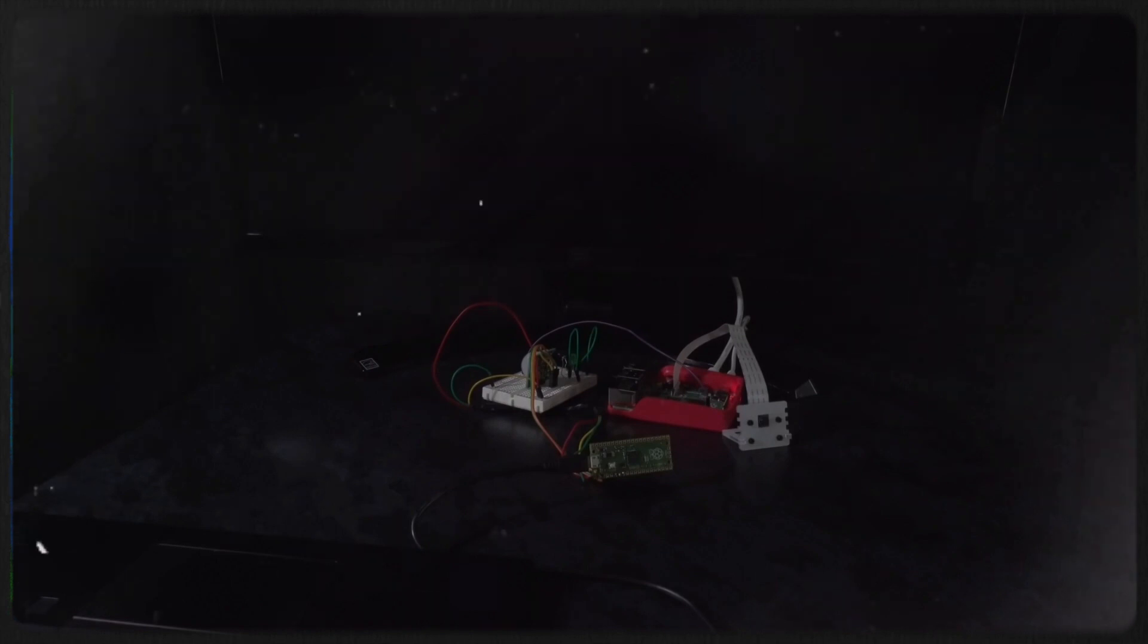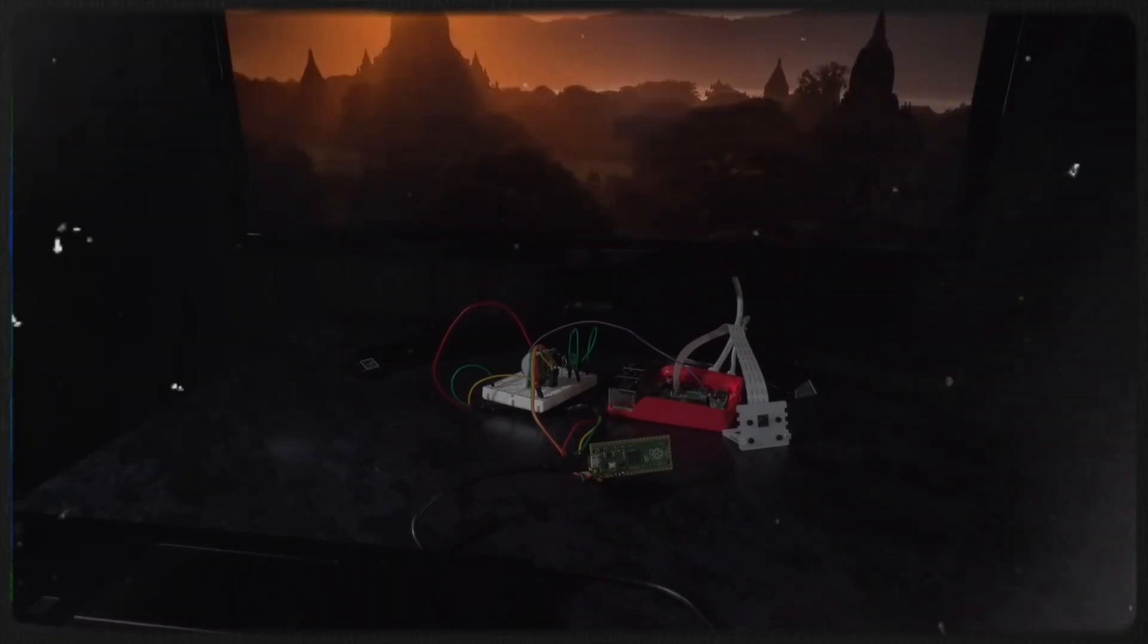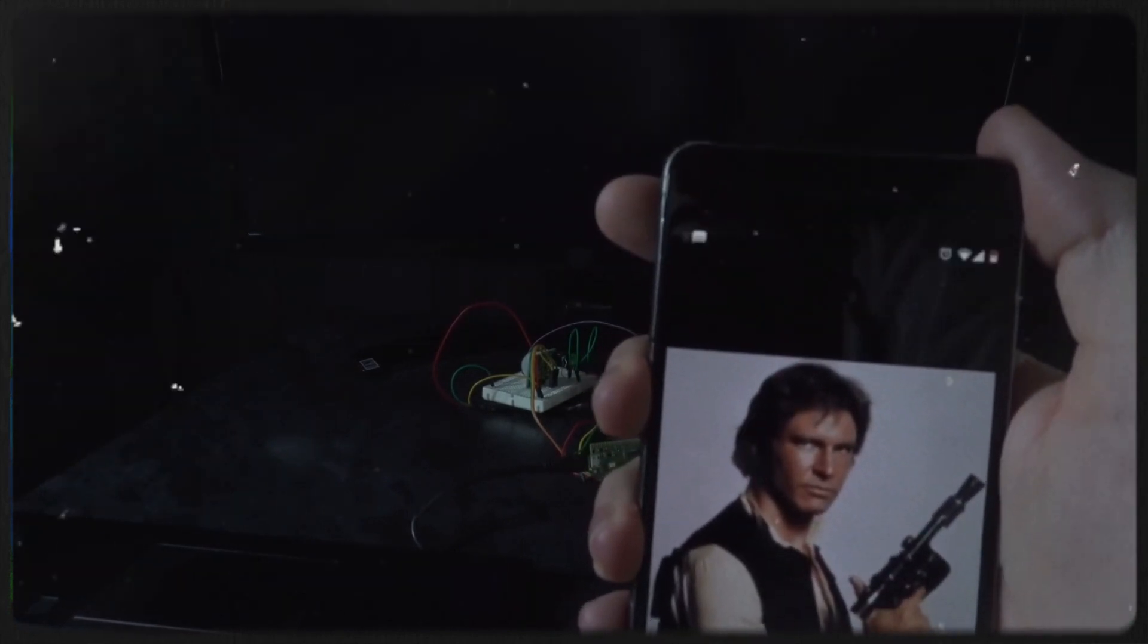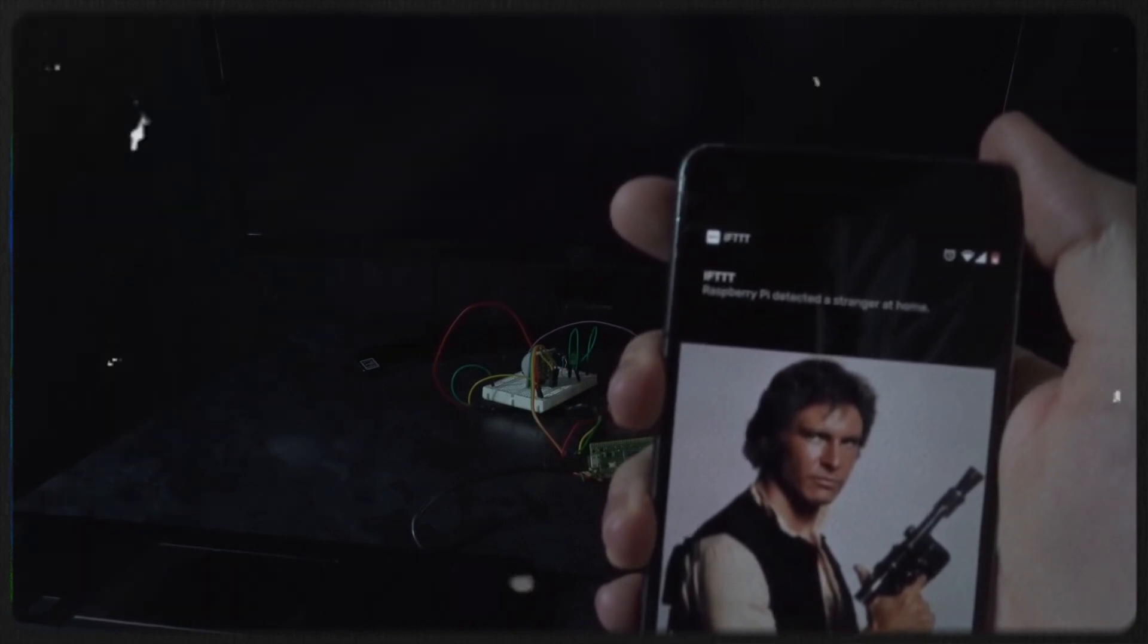Now, upon turning on, the Raspberry Pi will run a computer vision script which looks for human faces. If it doesn't find my face, but rather the face of a stranger, it will then ping me a notification on my phone sent through IFTTT. Here's a stranger's face. As you can see, I got the notification.